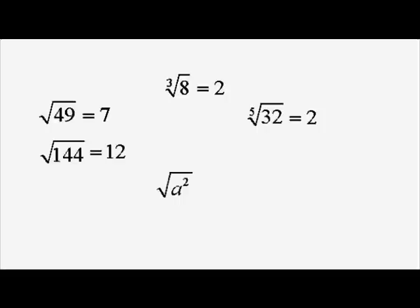Now, in general, if you have a number which is a squared and you take its square root, you just get the number a. Or if you've got a cubed and you take its cube root, then the number is also a.